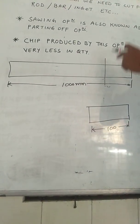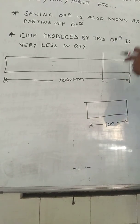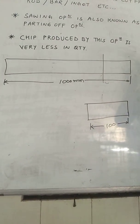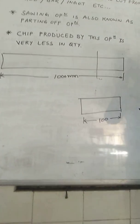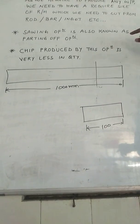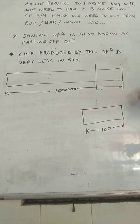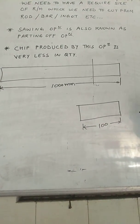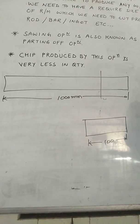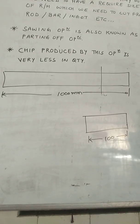So this is a cutting operation or known as a sawing operation, or we can also tell this operation as a parting off operation. Now compared to other machining operations, chip produced by this operation is very less in quantity.